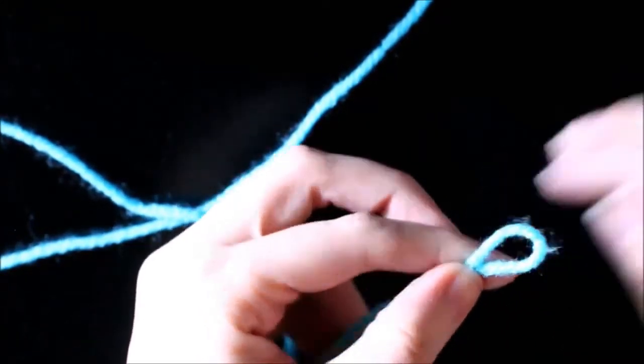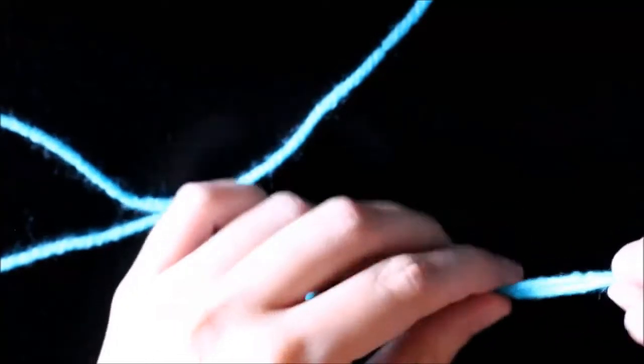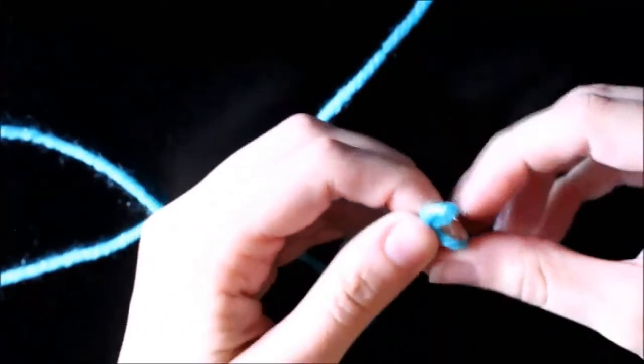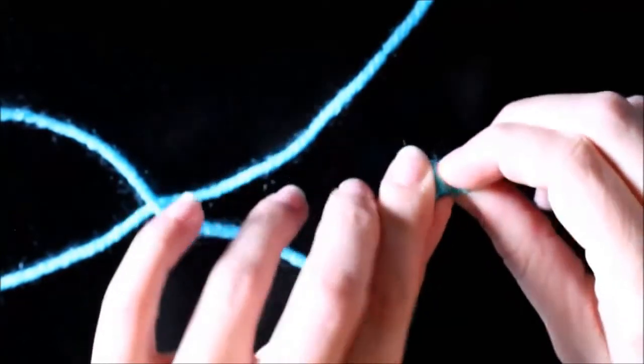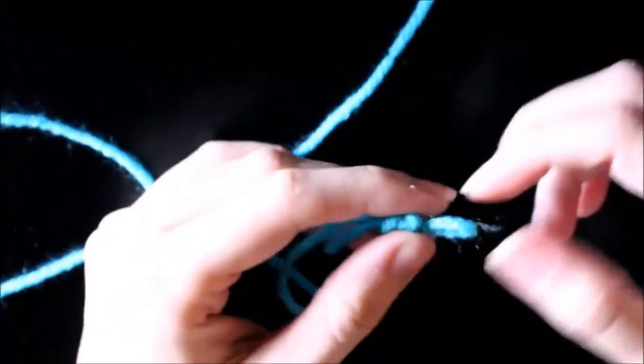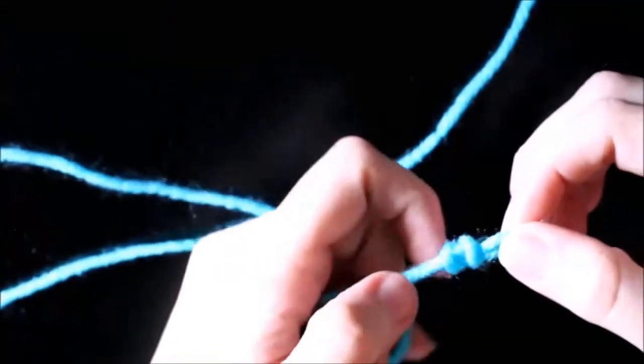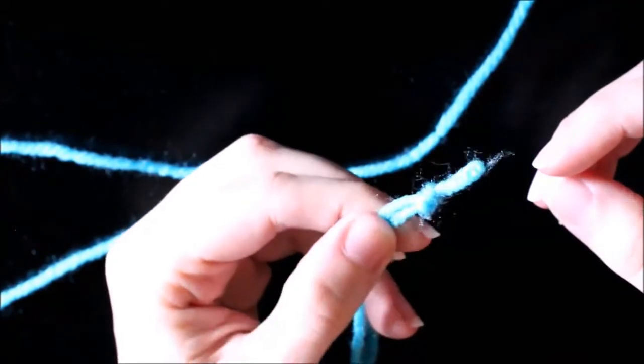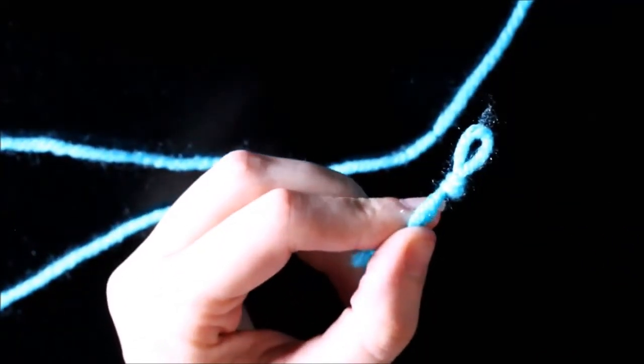So we need to start with a loop. You can create it using a slip knot, but if you don't know how to do a slip knot, just make a loop with your finger and then tie it around. So the yarn won't move and you won't lose all your stitches that you're creating.